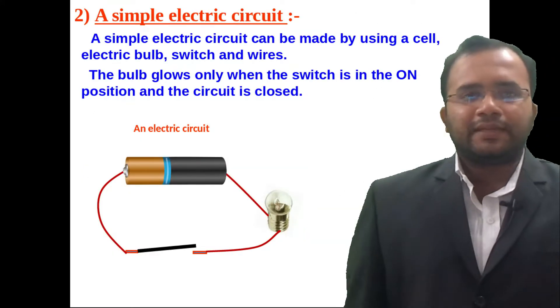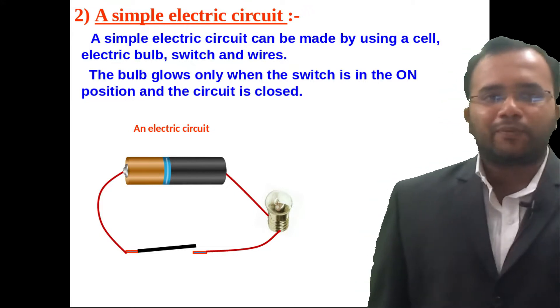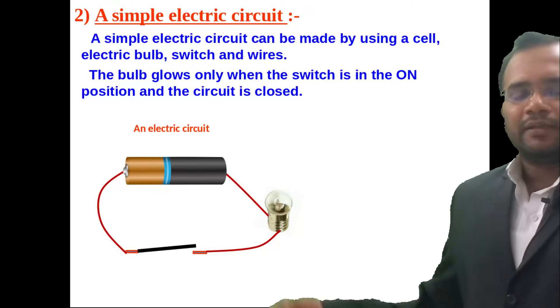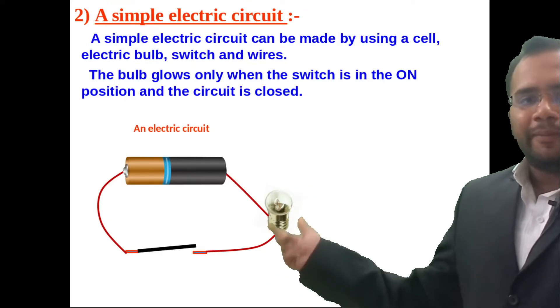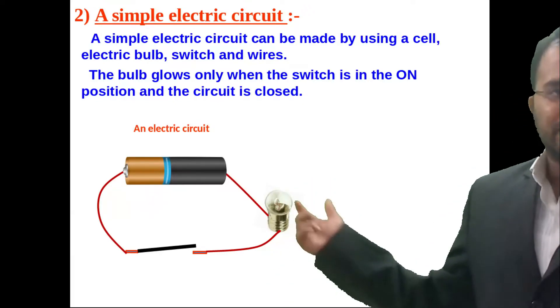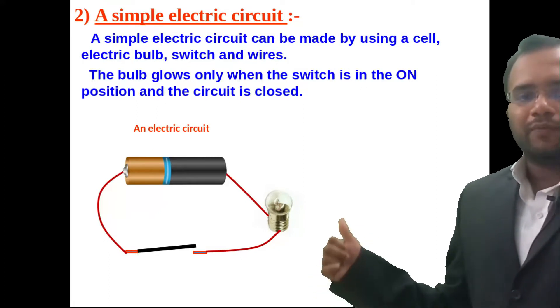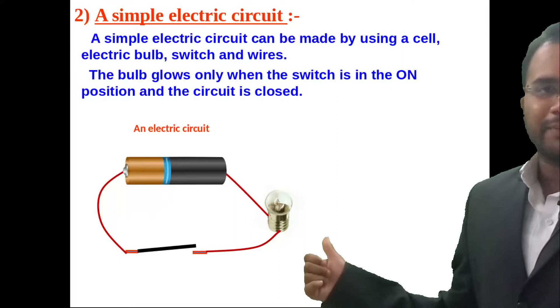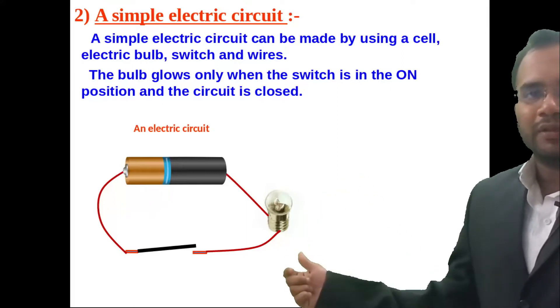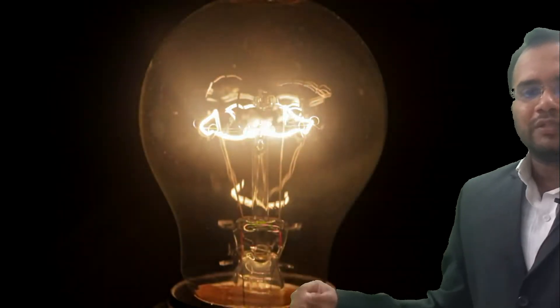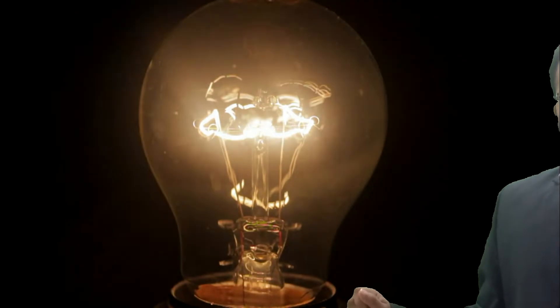A simple electric circuit consists of a group of elements. In this picture we can see that a cell, a lamp, and a switch are connected in series. There are two diagrams: one represents the switch-on position where the bulb is glowing, and the second figure shows the switch is off and hence the light is off.